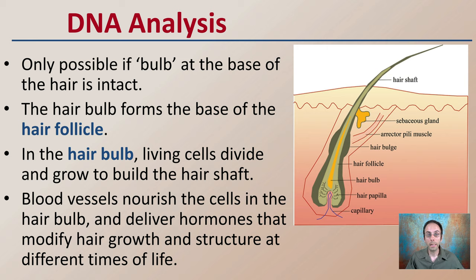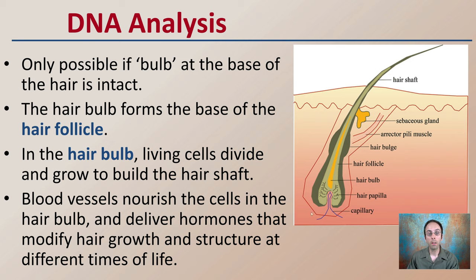This is why it's important for DNA analysis, because the blood vessels that nourish the cells in the hair bulb deliver hormones that modify hair growth and structure at different times. In addition, those growing cells are more likely to contain important DNA when we're looking at trying to take hair, which is a class characteristic, and trying to get it more into the individual characteristic category.